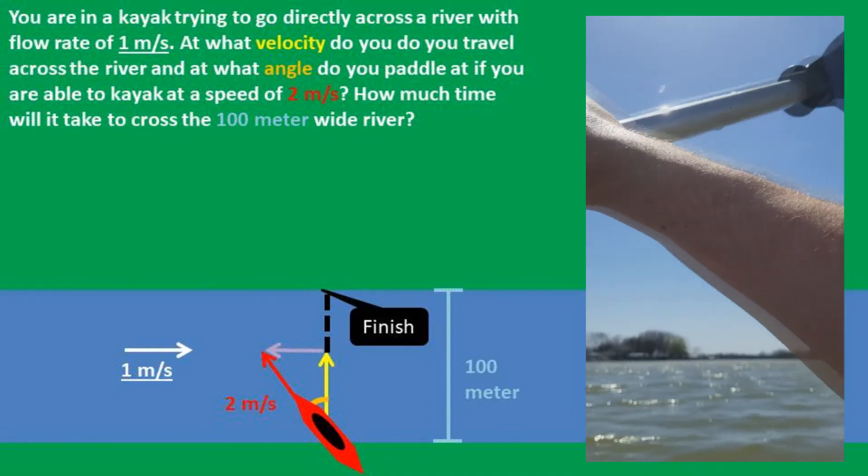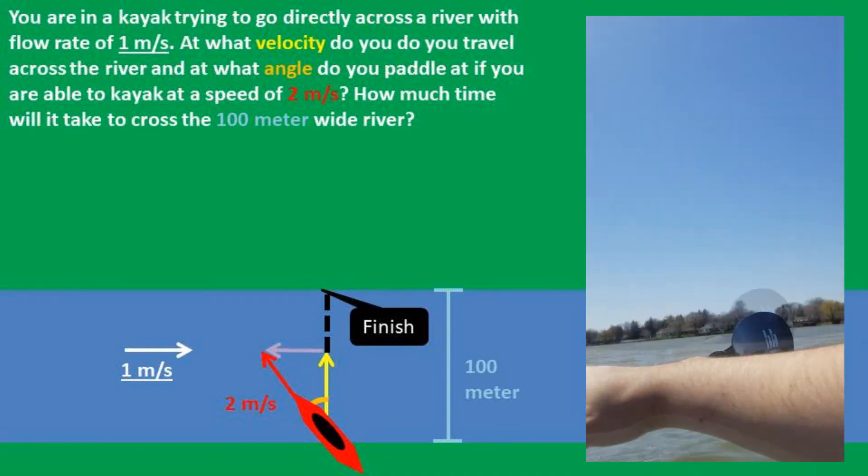In this problem, you are in a kayak trying to go directly across a river with a flow rate of 1 meter per second.